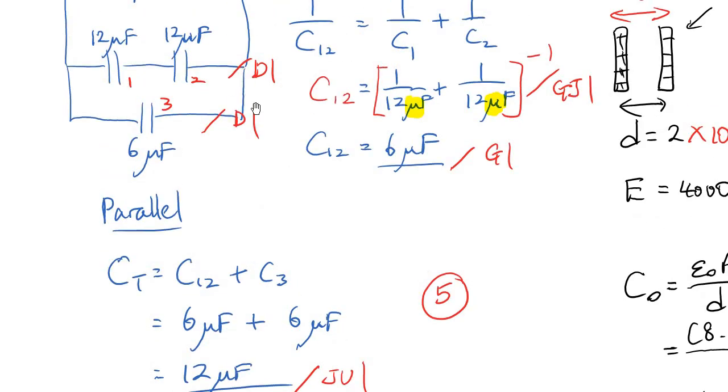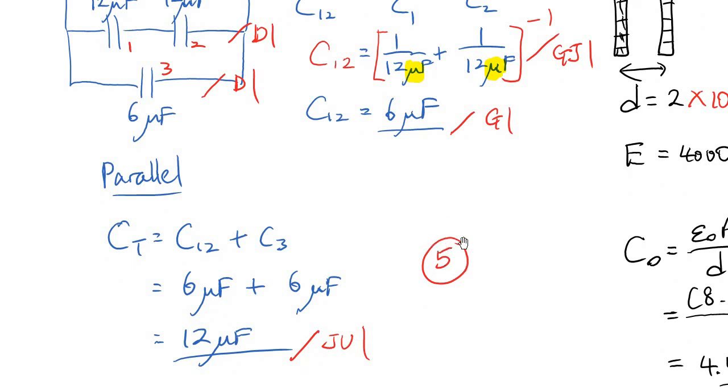So the diagram, you get 2 marks. Here, 2 marks. And here, 1 mark. You get total 5 marks. Alright.